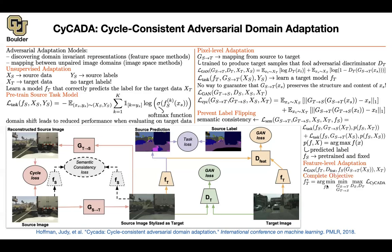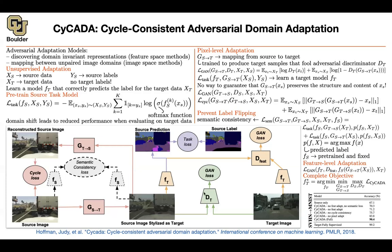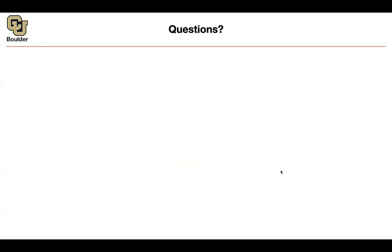You train your discriminators, generators, and task neural network jointly. Results are shown for translation from Street View House Numbers to MNIST, and there are additional semantic segmentation results in the paper. This method does the best — because a lot of effort went into the framework — and gets closer and closer to an oracle trained on a lot of labeled target-domain data.